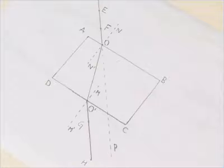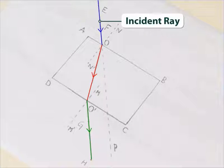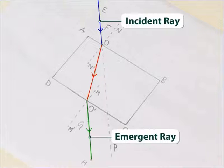The lines EO, OO', and O'H represent the incident ray, the ray in the glass slab, and the emergent ray respectively.